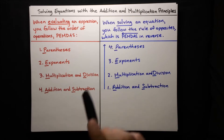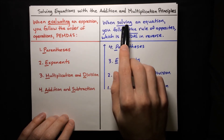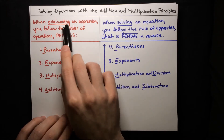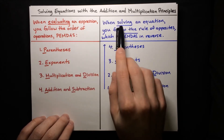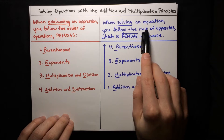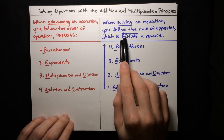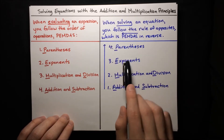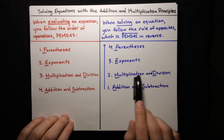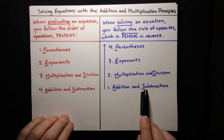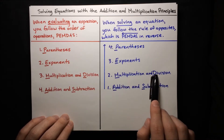When solving an equation, we go the opposite way. Solving is kind of like unevaluating an expression. So to solve an equation, we need to follow the rule of opposites, which is just PEMDAS in reverse. We start with the addition and subtraction, and then after that, we do multiplication and division.